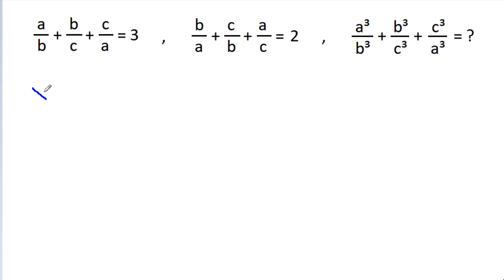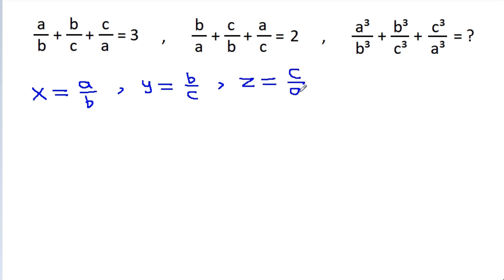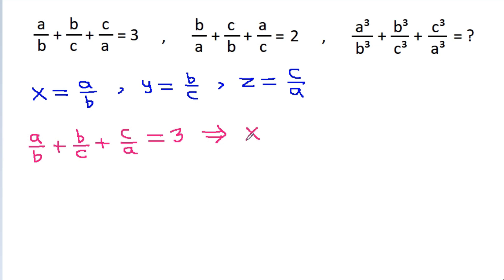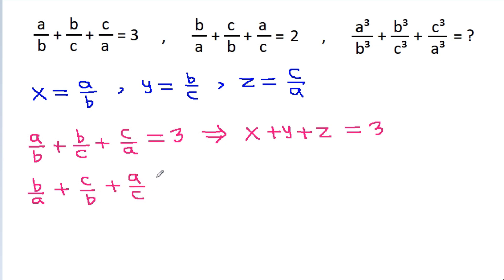Suppose x is equal to a/b, y is equal to b/c, and z is equal to c/a. Then we have a/b + b/c + c/a is equal to 3, which becomes x + y + z is equal to 3. And we have b/a + c/b + a/c is equal to 2.